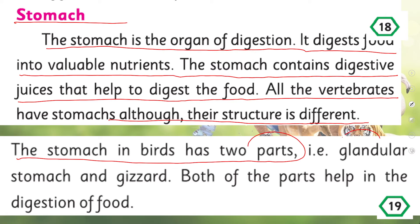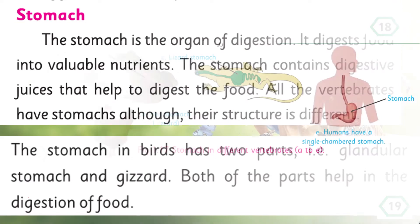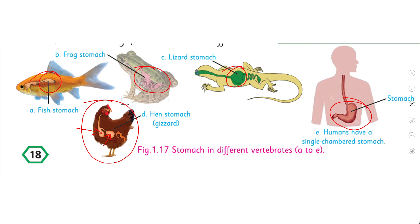The stomach in birds has two parts: the glandular stomach and the gizzard. Both parts help in the digestion of food. Here you can see the glandular part and the gizzard in a hen. We can also compare: this is the stomach in fish, the stomach in frog, the stomach of a lizard, and the human stomach — a well-developed stomach.